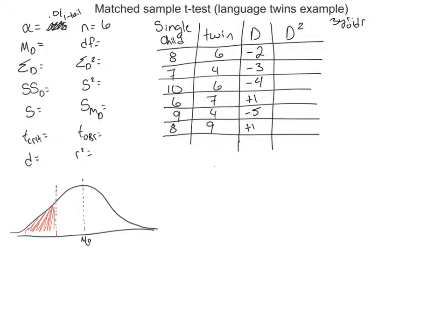With related sample t-testing — whether matched sample or repeated sample — the key thing we're looking at is the difference. So the first step is to find the sum of the differences: negative 2, negative 3, negative 4, positive 1, negative 5, and positive 1, giving us a sum of differences of negative 14.